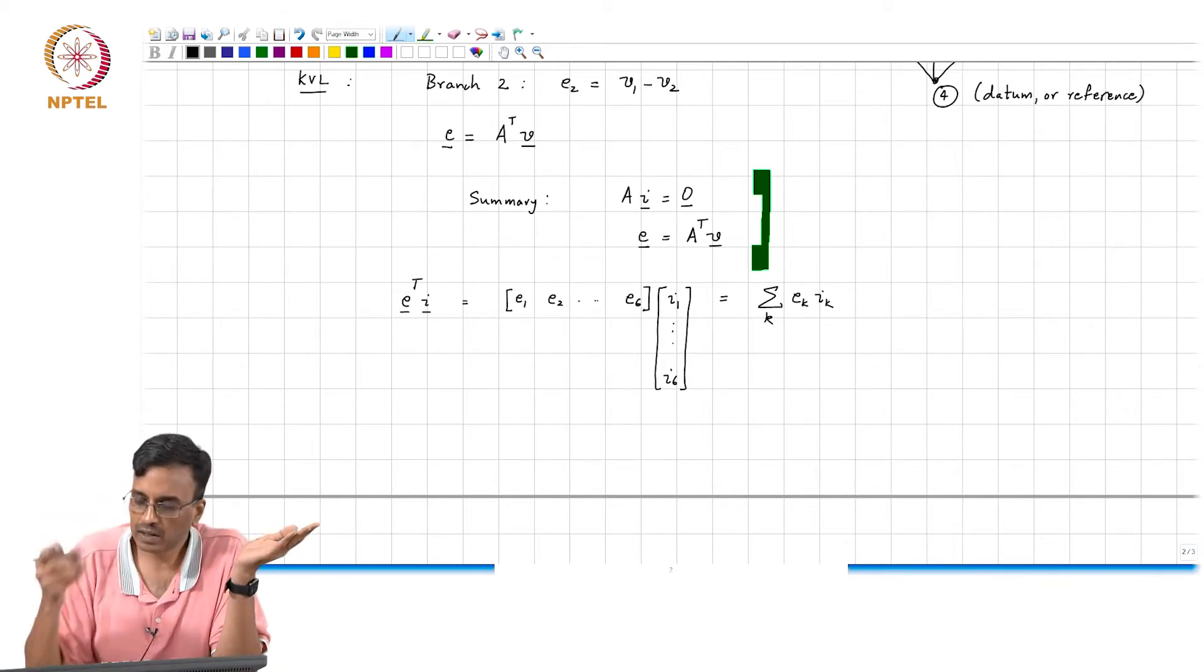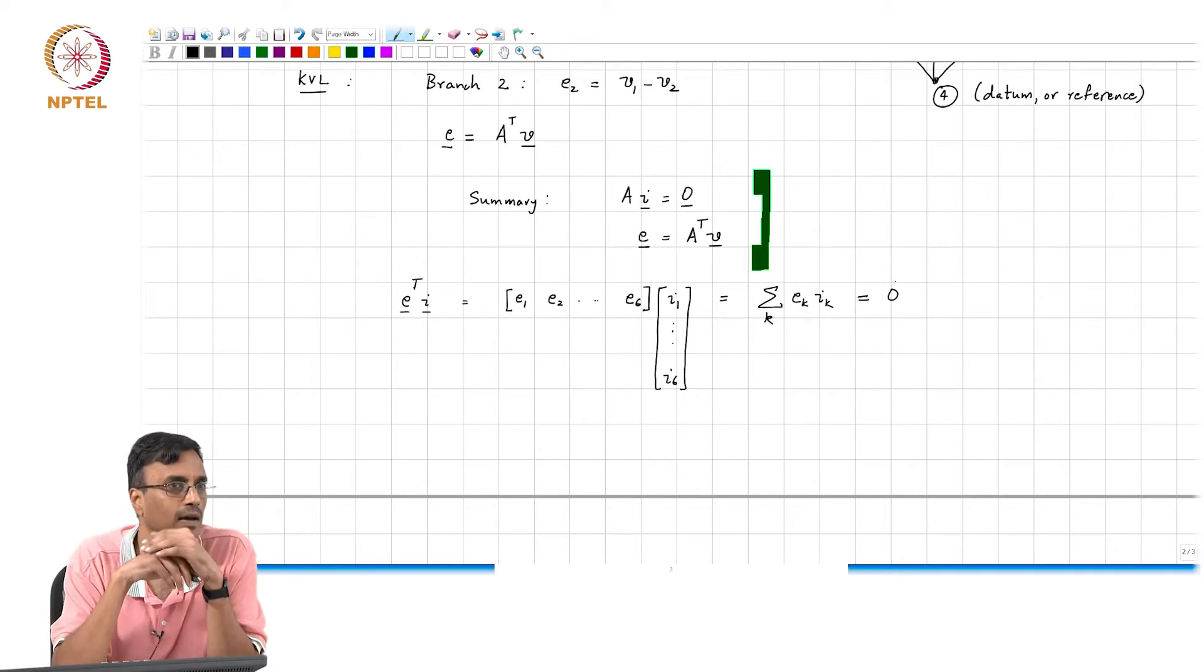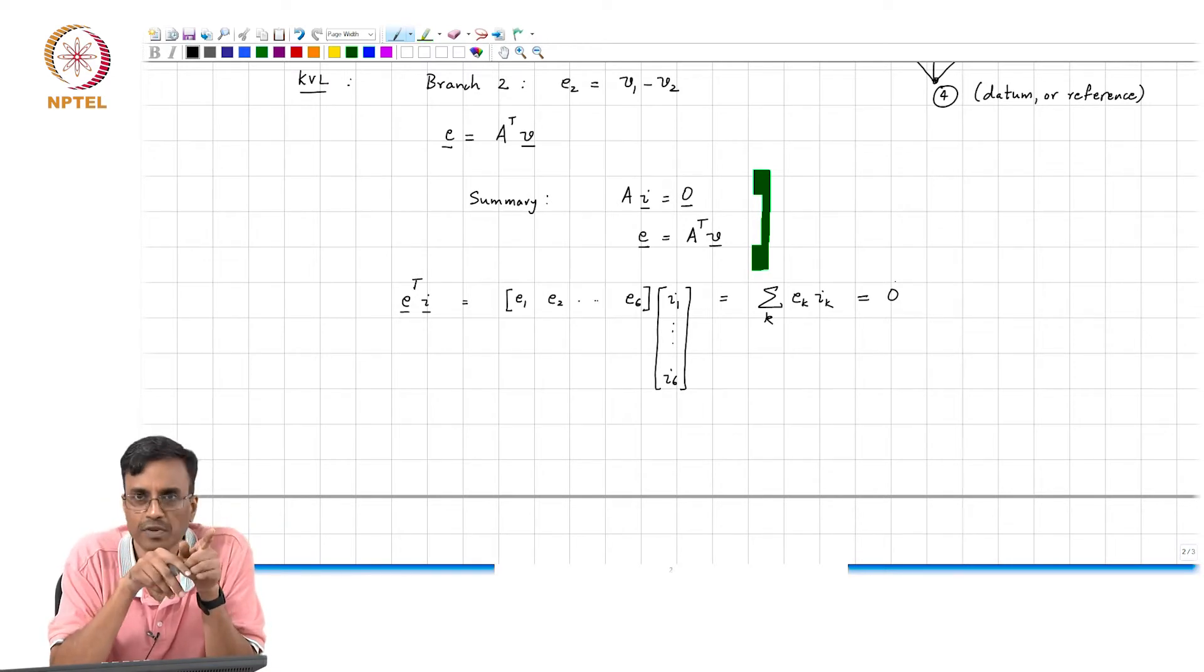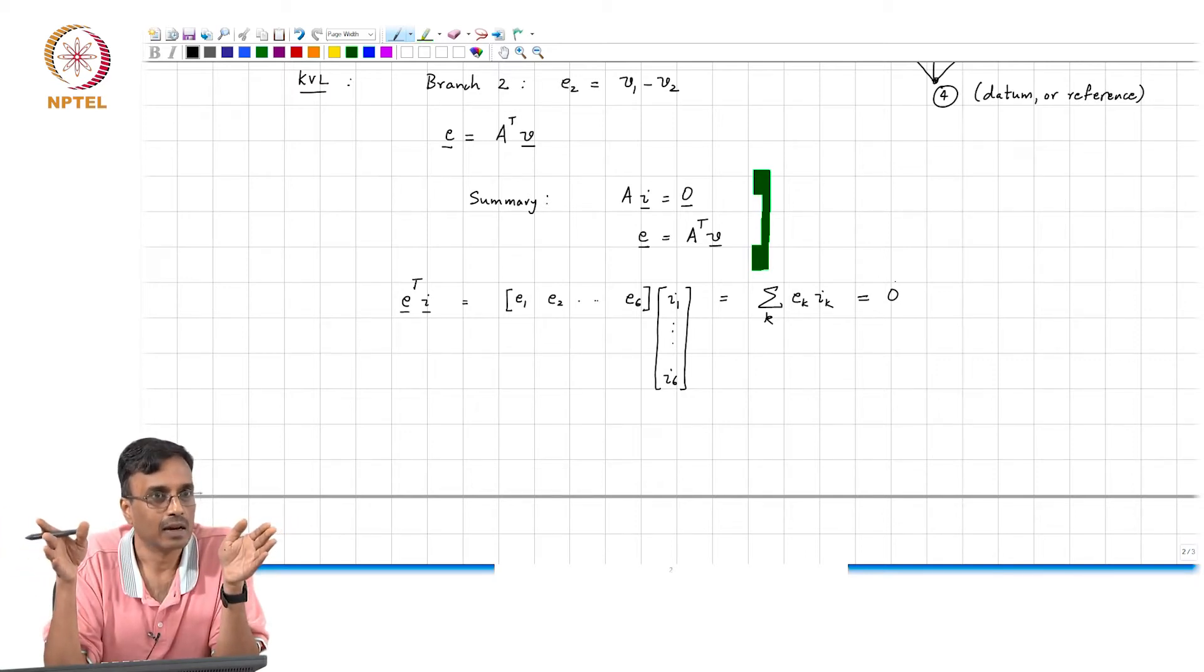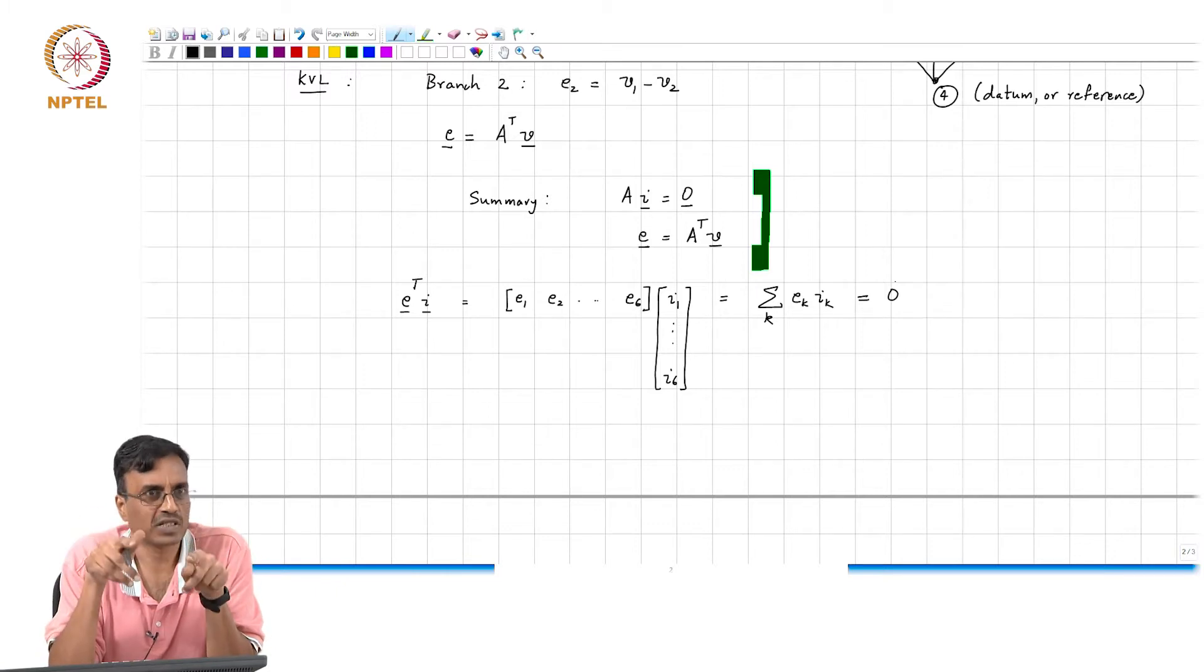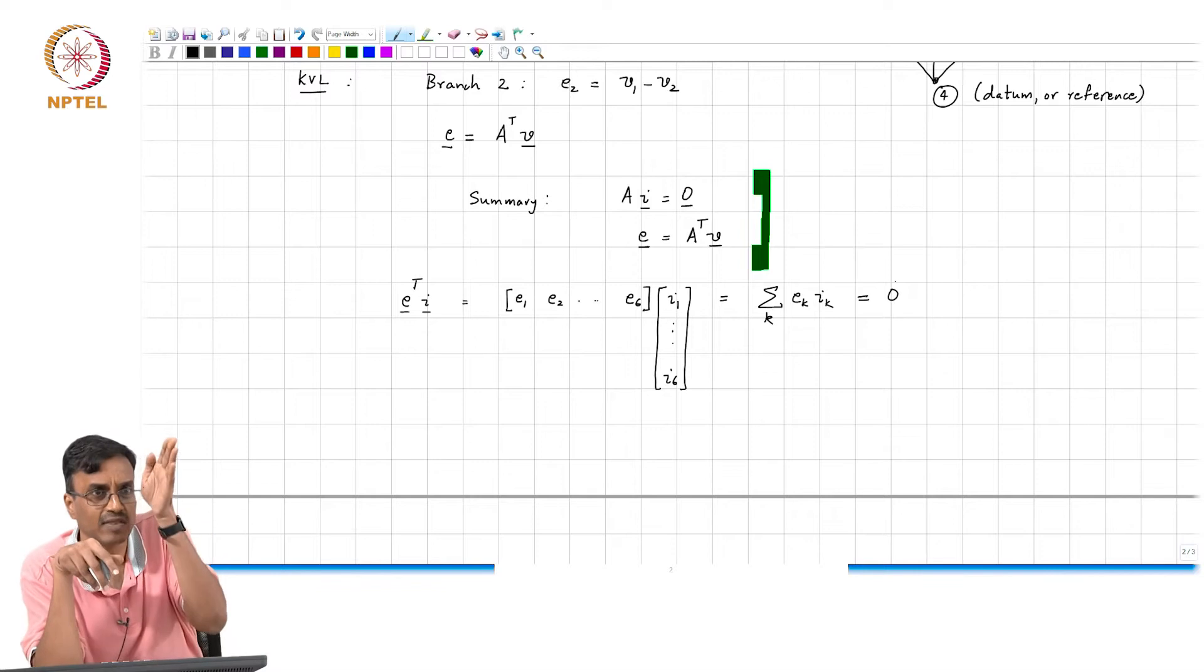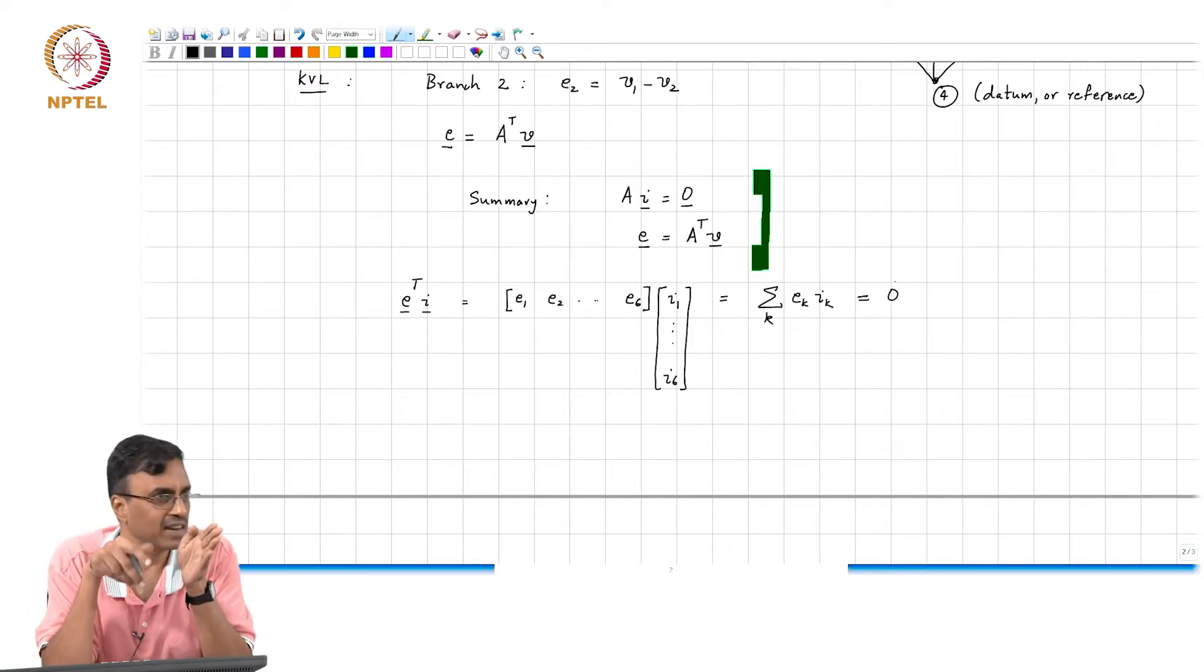You expect this to be 0 and why does that make sense? Law of conservation of power. Remember power and energy are two different things. Power is an instantaneous quantity, energy is an integral. Energy is of course conserved, but this is also telling you that energy is conserved at every instant.